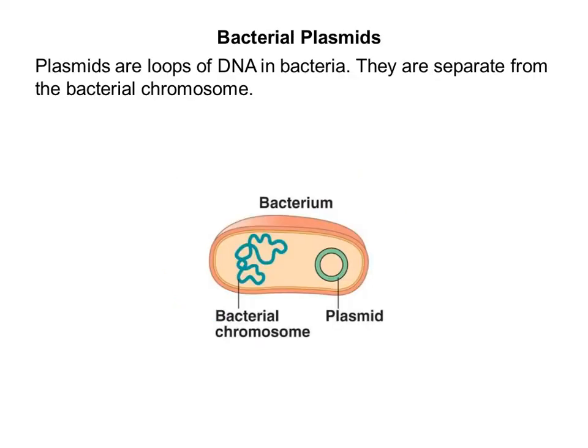Plasmids are loops of DNA in bacteria, and they are separate from the bacterial chromosome. During bacterial conjugation, the plasmids are what actually will leave through the pili and go and share DNA with other bacteria. We use plasmids in genetic engineering because they're easy to cut with restriction enzymes and they can hold on to foreign DNA. They become what we call a vector because they will hold that DNA and carry that information.